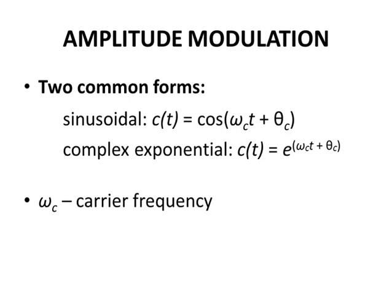There are two common forms of amplitude modulation. The first is sinusoidal, where c(t) = cos(ω_c·t + θ_c).